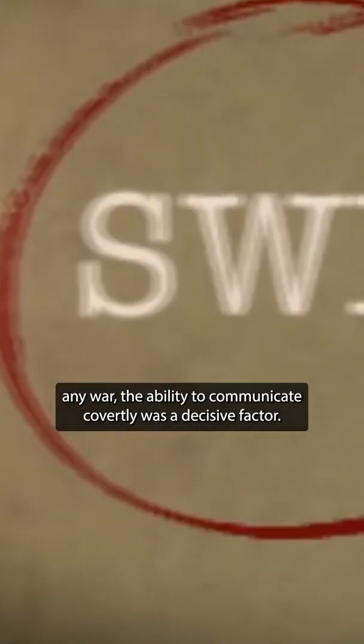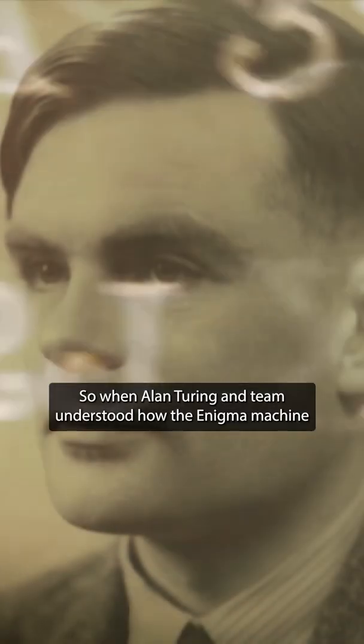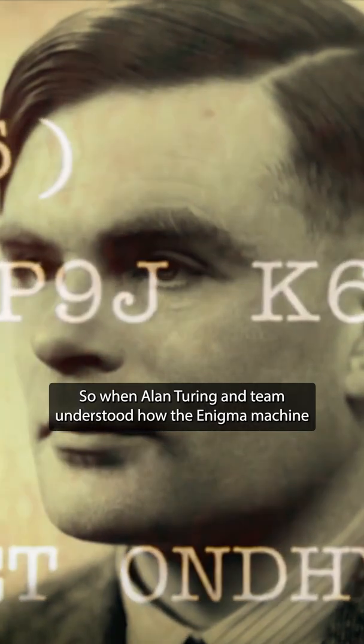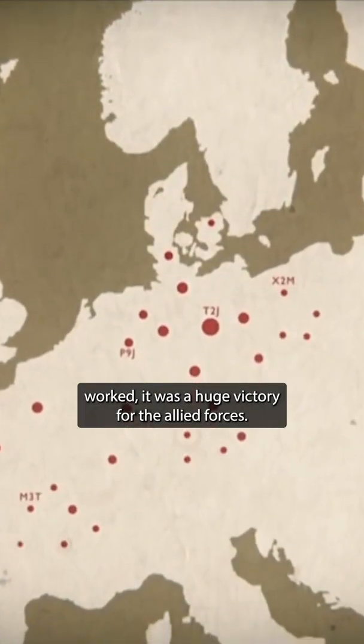And as with any war, the ability to communicate covertly was a decisive factor. So when Alan Turing and team understood how the Enigma machine worked, it was a huge victory for the Allied forces.